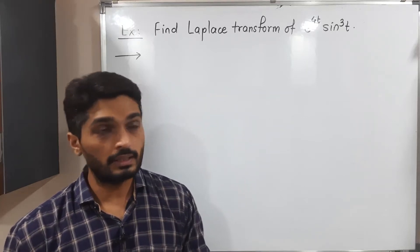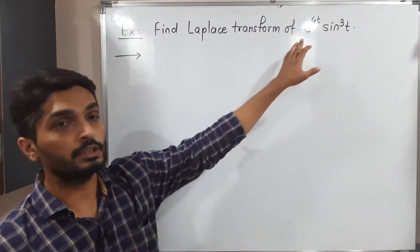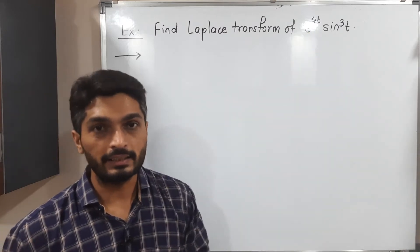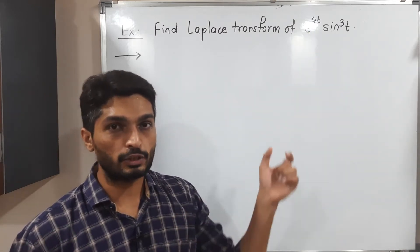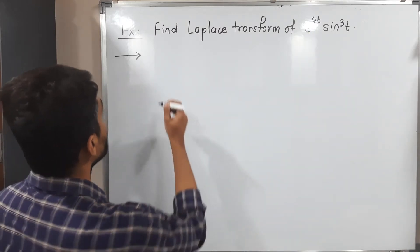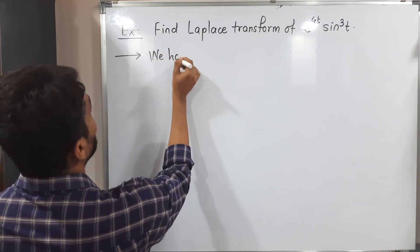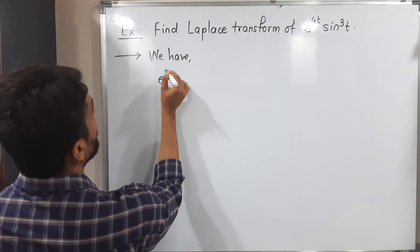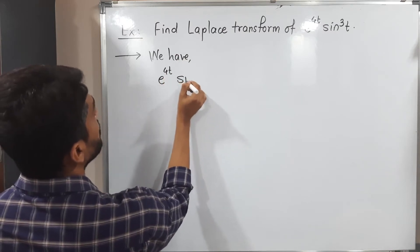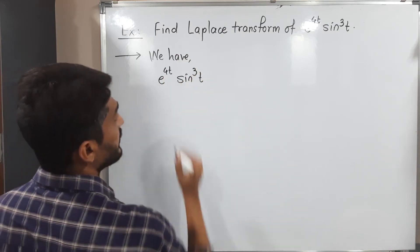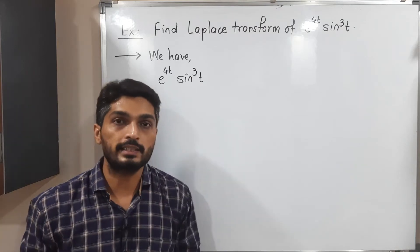Let us discuss this example. In this example, we have a function e^(4t) sin^3(t). So maybe because of some reflection, you cannot see that properly. So let me write, we have, I'm rewriting the function, we have e^(4t) sin^3(t). Sin 3t is there. So we have to find this Laplace transform.